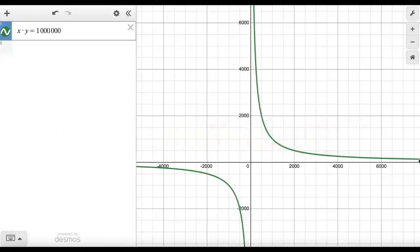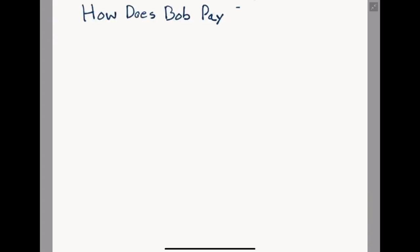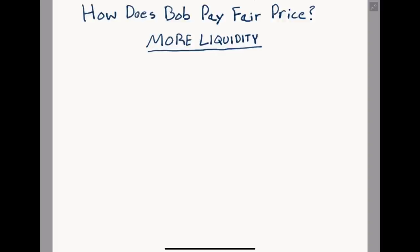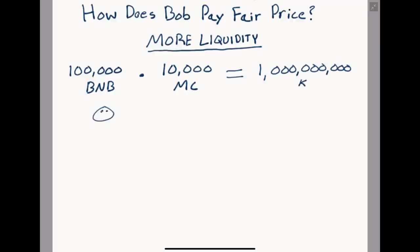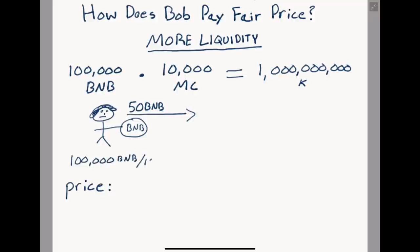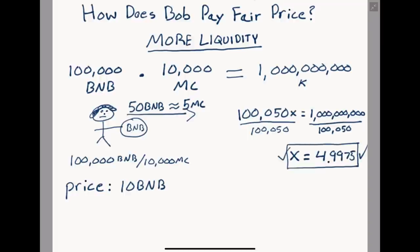But this is not sounding like a promising system — how does Bob pay a fair price? By having more BNB in the liquidity pool to start. If we instead had put 100,000 BNB into the pool, we would have a K value of 1 billion. Now if Bob wants to spend 50 BNB for Mark's Coin, he will get the correct amount back at a fair price because his 50 BNB hardly affects the 100,000 BNB in the pool. In this scenario, one Mark's Coin is worth 10 BNB, so Bob paying 50 should net him about 5 Mark's Coin — and our math tells us he will receive 4.9975 coins, much closer to what we want.